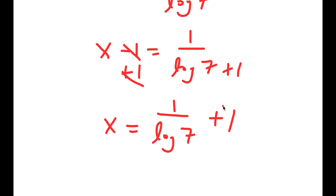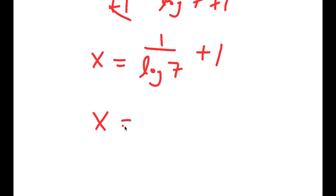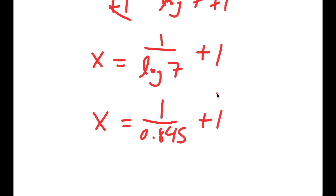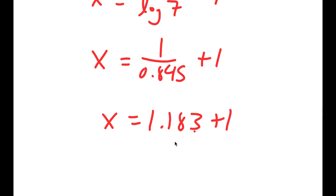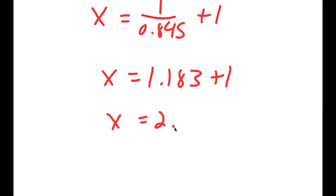Now log 7 equals 0.845, so I have 1 divided by log 7, and that's going to equal 1.183. So I have 1.183 plus 1, which is equal to 2.183.